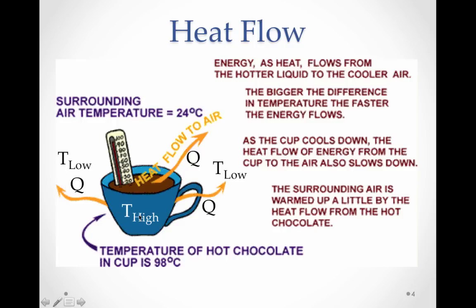So the molecules of the cup and hot chocolate, as they're giving up energy to the air molecules, these molecules will start to slow down. And this temperature will start to decrease. This temperature will start to increase slightly right around the cup because those molecules will be moving faster because of the heating. So energy, as heat, flows from the hotter liquid to the cooler air. The bigger the difference in temperature, the faster the energy flows.